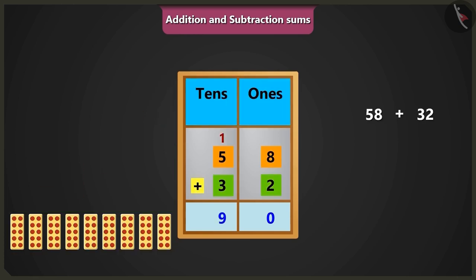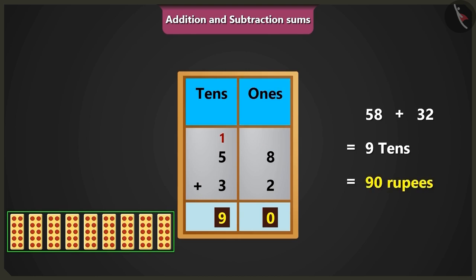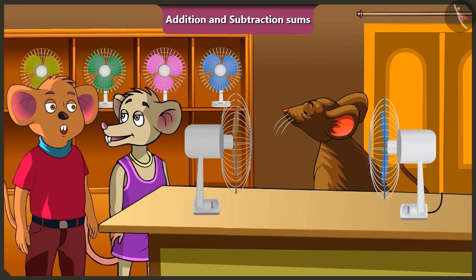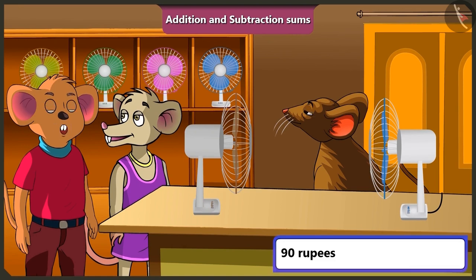So it will be 9 tenths after adding 32 to 58. Yes, 9 tenths means 90 rupees. Oh yes. If I sell old fan, then I will have a total of 90 rupees.